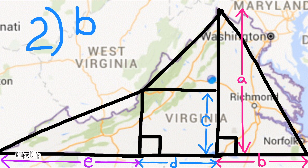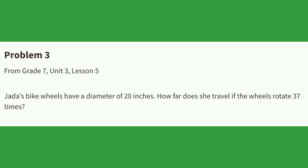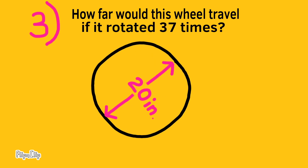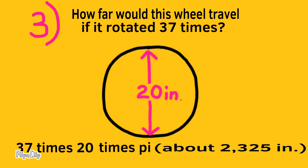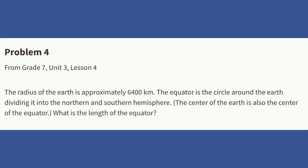Number three: Jada's bike wheels have a diameter of 20 inches. How far does she travel if the wheels rotate 37 times? The diameter is 20 inches. To find how far the wheel travels in 37 rotations: 37 times 20 times pi — that's about 2,325 inches.